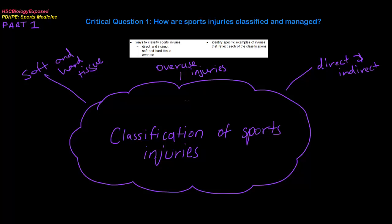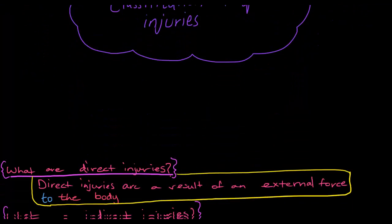To start off, we have Critical Question 1: how are sports injuries classified and managed? I'm going to be splitting these videos into parts for every single critical question. For this critical question I'll be splitting it into 4 parts, and for the first part we'll be covering ways to classify sports injuries — looking into direct and indirect injuries, soft and hard tissue injuries, as well as overuse injuries, with specific examples of each.